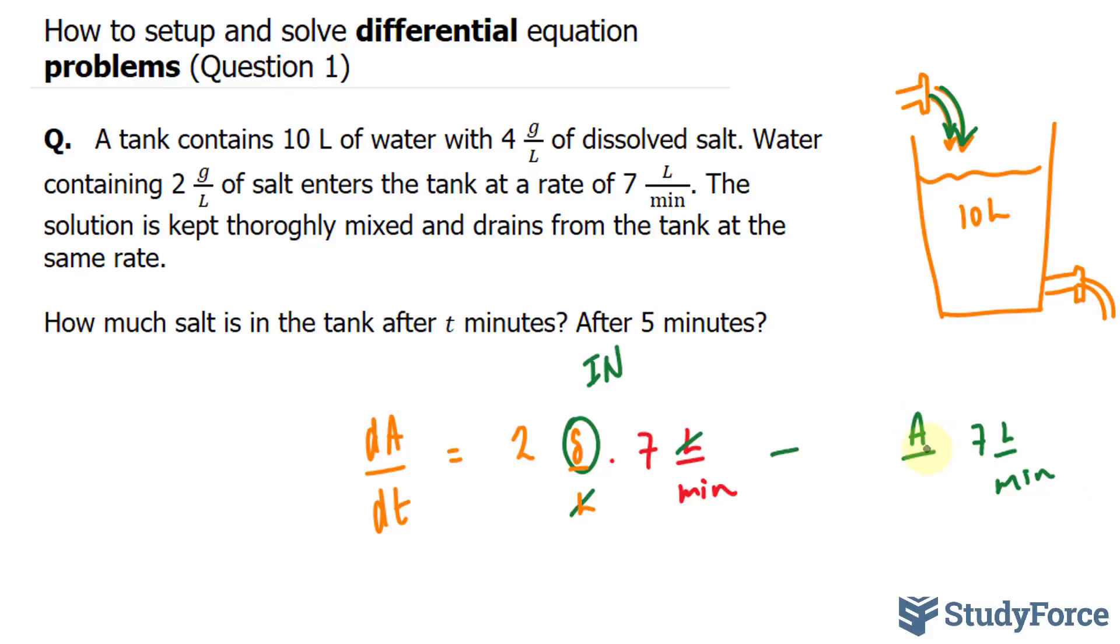And we have to multiply this by the amount in grams, which we don't particularly know, per every 10 liters. And that's the tank's volume. And by doing that, the liters units cancel out, and we have the amount of grams per minute leaving this tank.